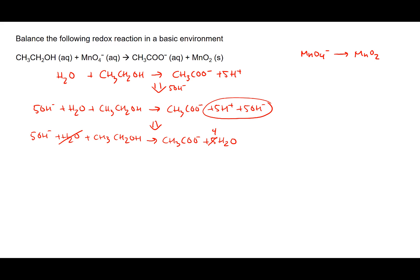The final thing to do is balance out the charges. On the reactant side we have 5 negative charges from the OH-. On the product side we only have 1 negative charge from the acetate ion. So we throw in 4 electrons on the product side — we're producing 4 electrons in this reaction. That's the balanced half reaction for ethanol.